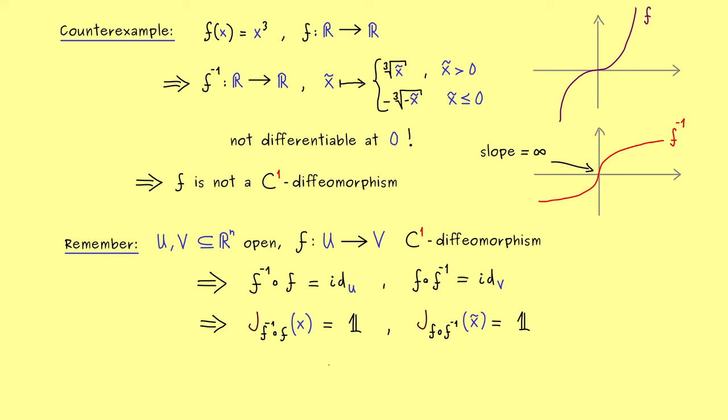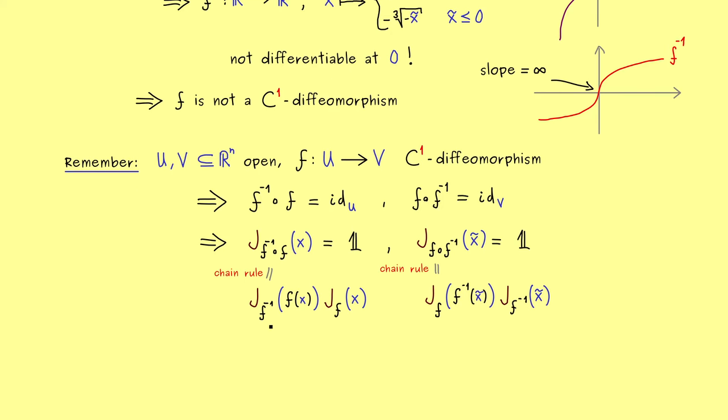And the same for the second equation, just for the other composition. And now the important ingredient is that we know that both functions in the compositions are differentiable, so we can use the chain rule. This means here we have a product of two Jacobians: the Jacobian of f inverse times the Jacobian of f. And of course, we can do the same chain rule here for the second equation. And then we get the different order of the Jacobian matrices. However, both are equal to the identity matrix, which simply means that both Jacobians are invertible.